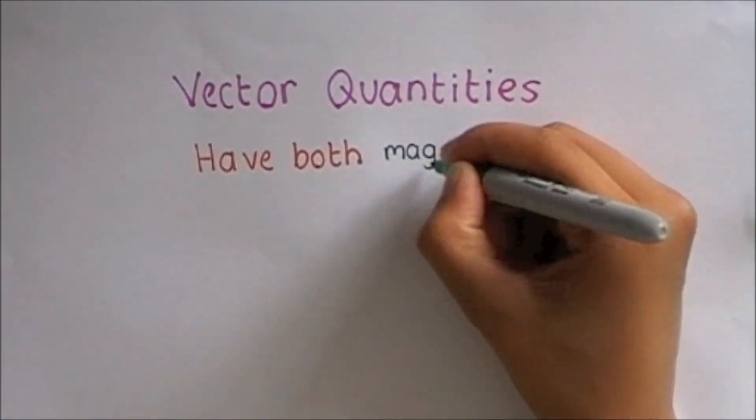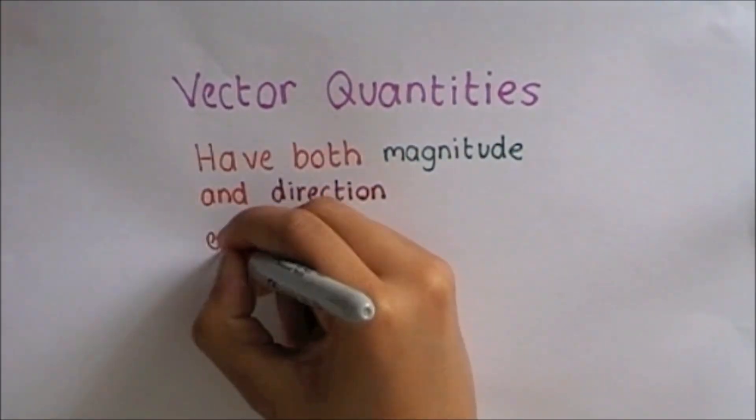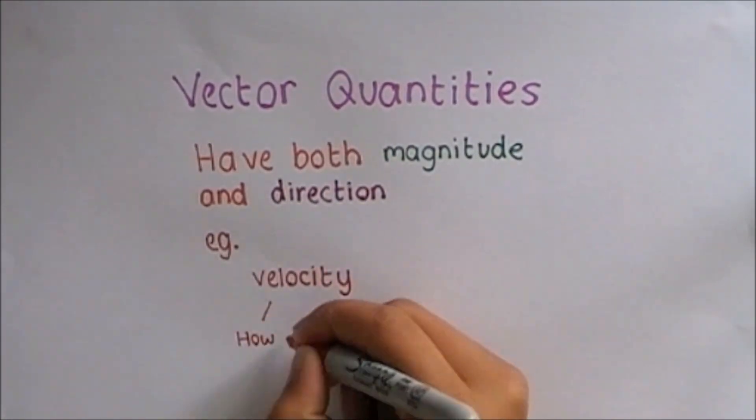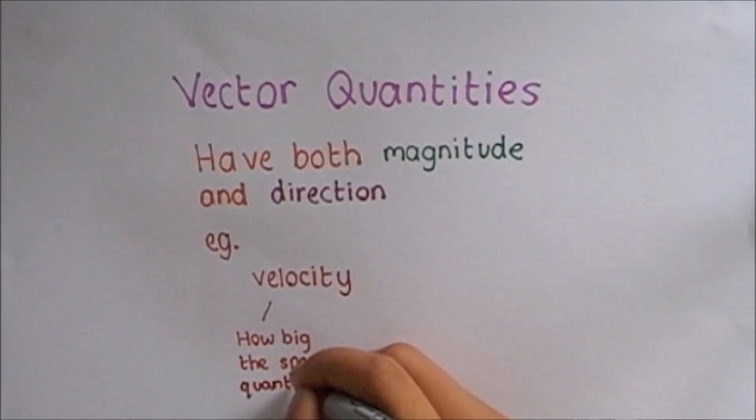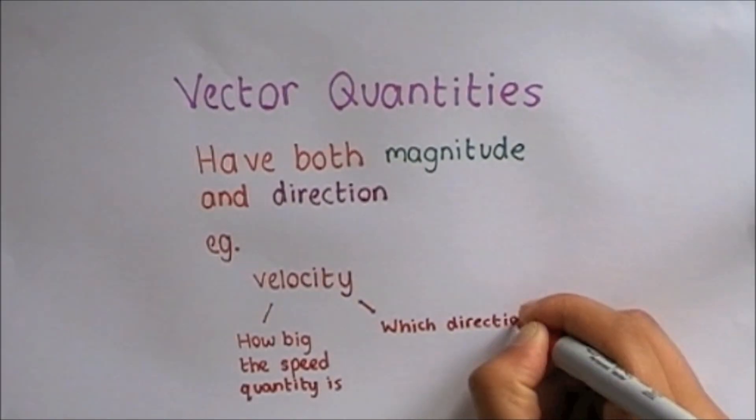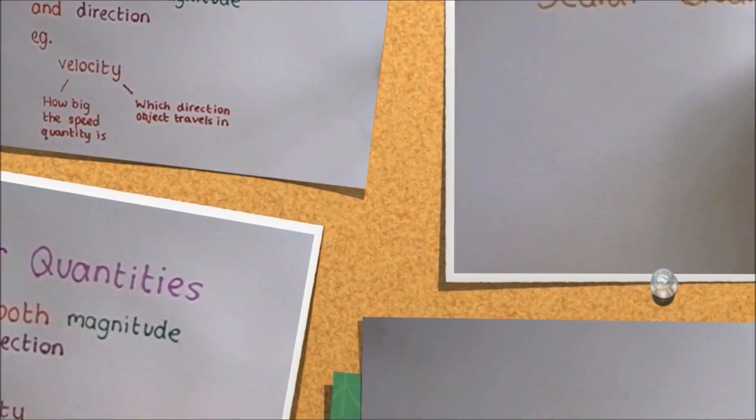Vector quantities are those which have both magnitude and direction. An example of this would be velocity, which tells us how great the speed is, and also which direction the object is travelling in.